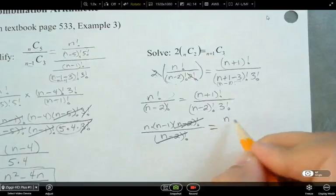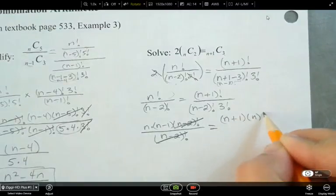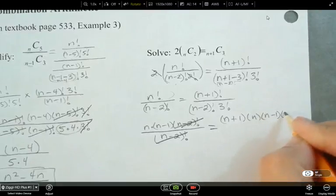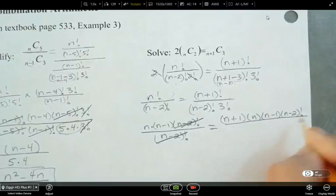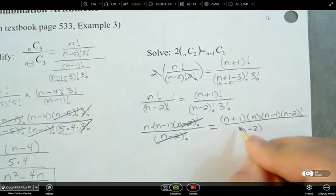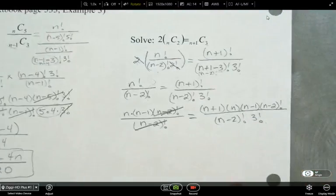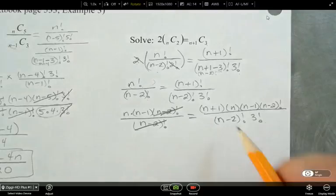I should have a bracket around that guy, n minus 2 factorial. So I can cancel that out. Then this n plus 1, I can write it as n plus 1 times n times n minus 1 times n minus 2 factorial over n minus 2 factorial. All right. How are you doing? Keeping up?